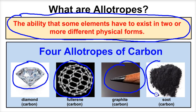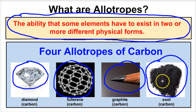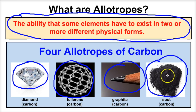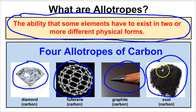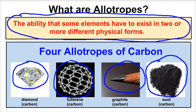Last but not least, a fourth allotrope of carbon is soot. If you have a fire in a fireplace at your house, that black stuff that lines the chimney afterwards is elemental carbon — that's soot, a fourth allotrope of carbon. All of these are exactly the same thing chemically; they're all carbon, but the way the carbon atoms rearrange themselves determines the different allotrope.